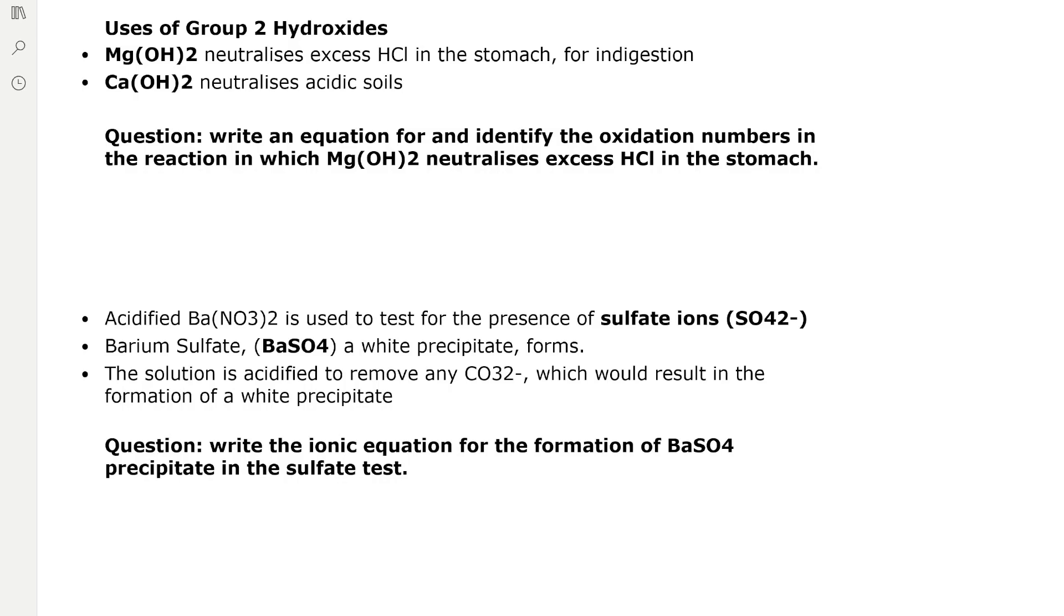Magnesium hydroxide is going to react with HCl to form a salt, magnesium chloride, and it's also going to form water as it's a neutralization reaction. To balance we need two molecules of HCl and two molecules of water. And don't forget your state symbols.